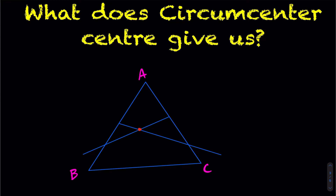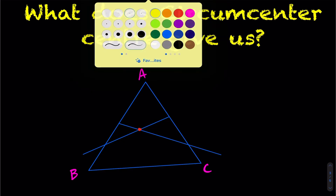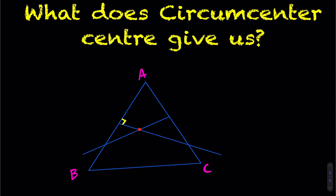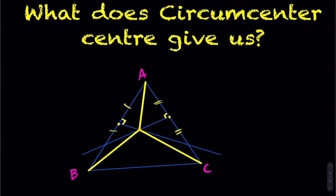So what does the circumcenter give us? What's the purpose of it? For an acute triangle, the circumcenter is on the inside, as you can see here with the perpendicular bisectors at 90 degrees. What the circumcenter gives you is a point that is equidistant — i.e. equal distance — to the vertices of your triangle. This circumcenter point has the property that its distance to A, its distance to B, and its distance to C are all the same. That's true whether you have an acute or an obtuse triangle.